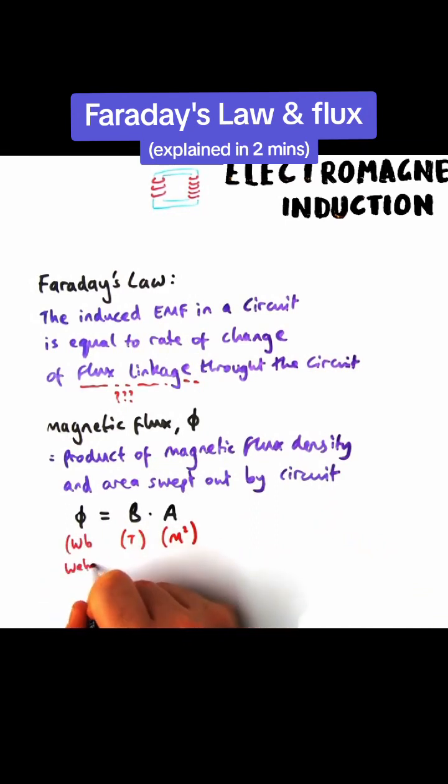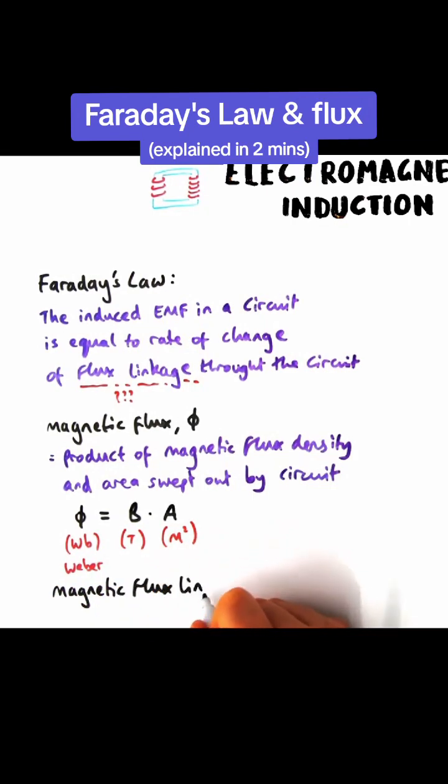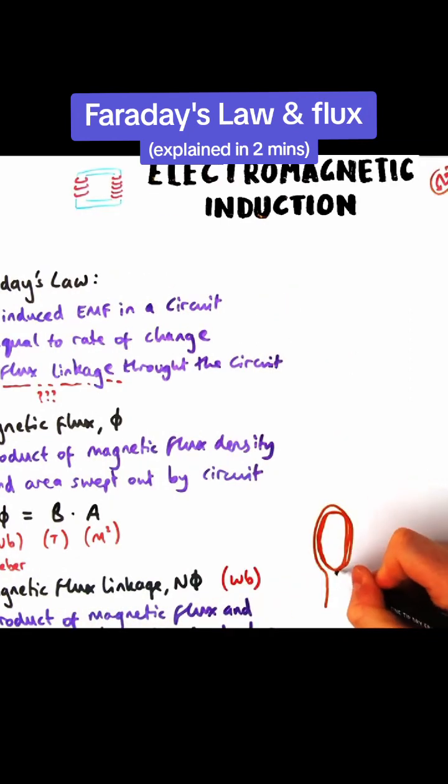Or it's German so it technically should be Weber, given by the initial WB. Magnetic flux linkage is given by the symbol N phi, that's just one symbol, it's not N times phi, and that's the product of magnetic flux, phi we just looked at, and the number of turns on the coil that you're investigating.